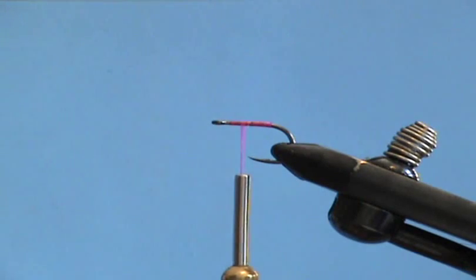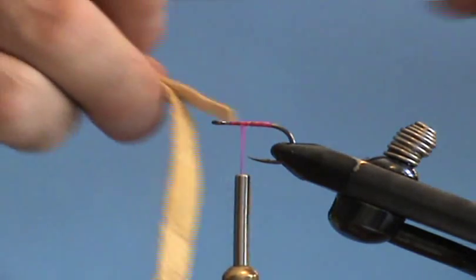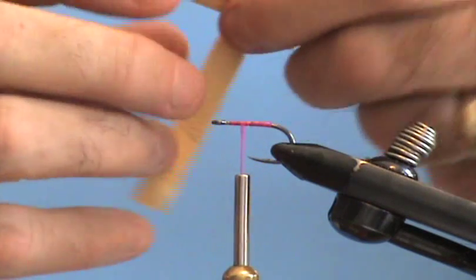I'm going to use a stiff piece of monofilament that I'm showing you right now for my splint, and that's going to extend past the bend of the hook enough to keep this chamois from falling around the bend.